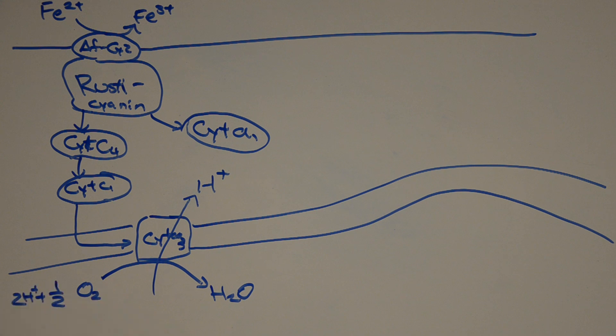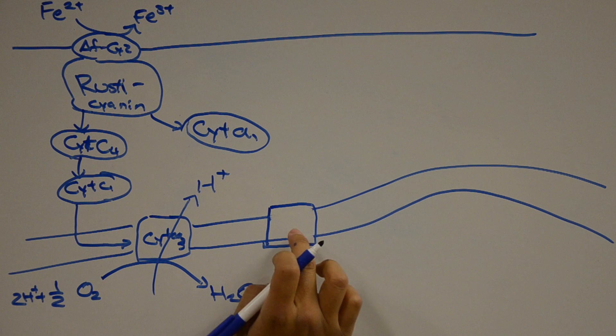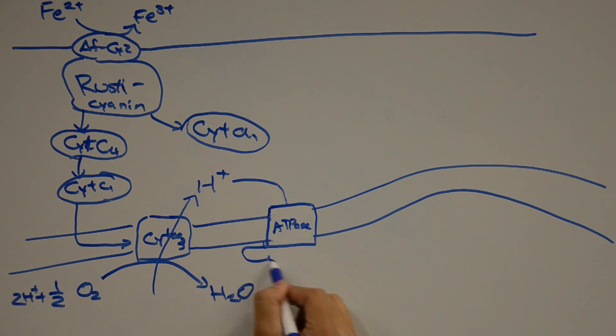The complex transfers its electrons to molecular oxygen, producing water, and of course driving the pumping of two protons into the periplasm. The protons then flow back across the membrane through ATPase, and ATP is produced.